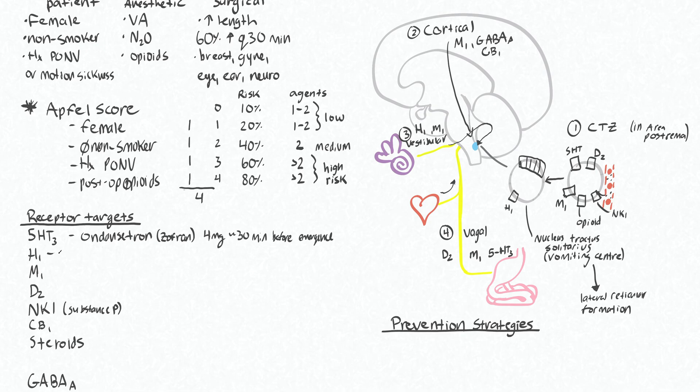Most people will end up getting ondansetron even if you're low risk. For targeting your histamine receptors, people will think Gravol is sort of the prototypical drug for that, and that is dimenhydrinate. Now dimenhydrinate is actually just a combination of two drugs: diphenhydramine, which is Benadryl, and 8-chlorotheophylline.